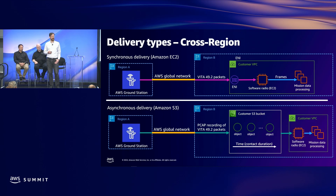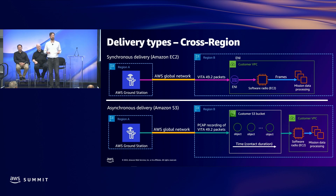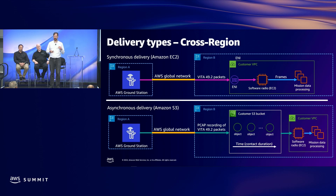Cross-region delivery means AWS Ground Station will allow you to specify that you want a downlink or uplink to happen from a region other than the antenna system you're scheduling. For example, if you want to schedule a contact in Bahrain but have your processing infrastructure in US West 2 in Oregon, this feature lets you specify that — AWS Ground Station will backhaul the traffic across our private global backbone network and deliver it to you in the region of your choosing.